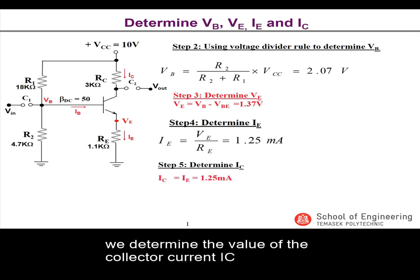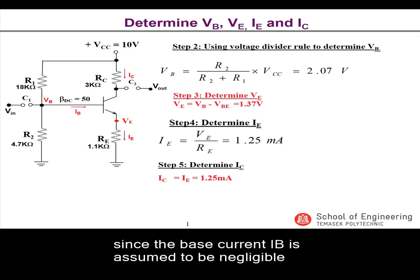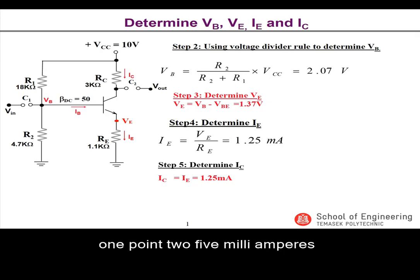Moving on to step 5, we determine the value of the collector current IC. IC is equal to IE since the base current IB is assumed to be negligible. Hence IC is equal to 1.25 mA.